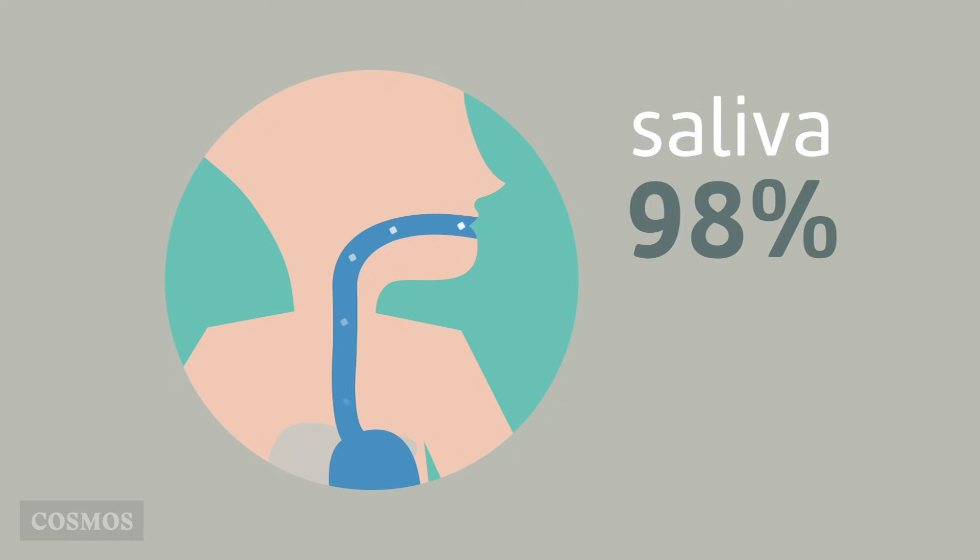For example, one of the ways we digest food is by dissolving the water-soluble parts of it, such as salt and sugar in saliva, which is over 98% water.